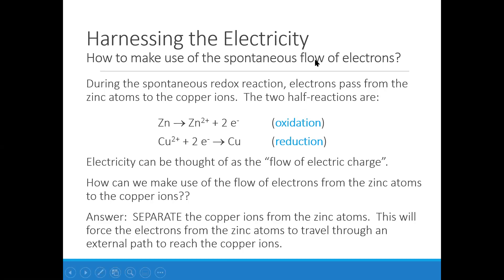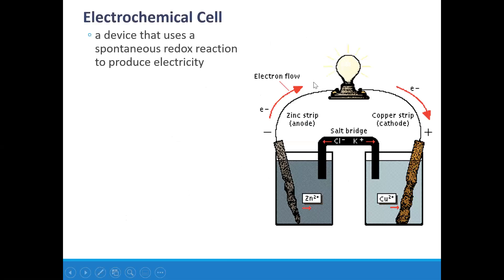So the key idea is: we have to separate the zinc from the copper, but provide an external path — a wire — that the electrons can get from zinc to copper. Let's hold off on what happens when a battery runs out and first talk about what happens in a battery. Here's a picture of an electrochemical cell — and more specifically, this is called a galvanic cell.